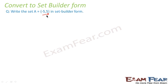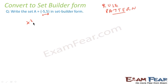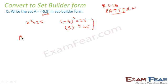Let's see one more example. We have the set {−5, 5} and we have to write it in set builder form. The pattern here is that when you square either element, you get 25: (−5)² = 25 and 5² = 25. So we can write A = {x : x² = 25}.